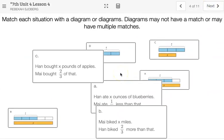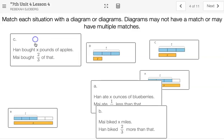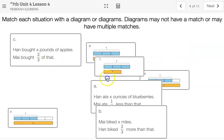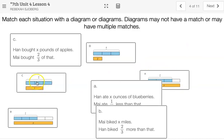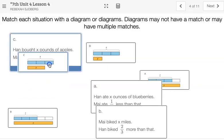Okay, so here we're going to match the situation with the diagram. And it's possible to have matches or may have no matches or multiple matches. So if we say Han bought X pounds of apples and Mai bought 2 thirds of that, we're looking for a full amount and then the next one to be 2 thirds. So it looks like diagram C. The first one's a full or 3 thirds. The bottom one has 2 thirds of that hole. So these guys should match.